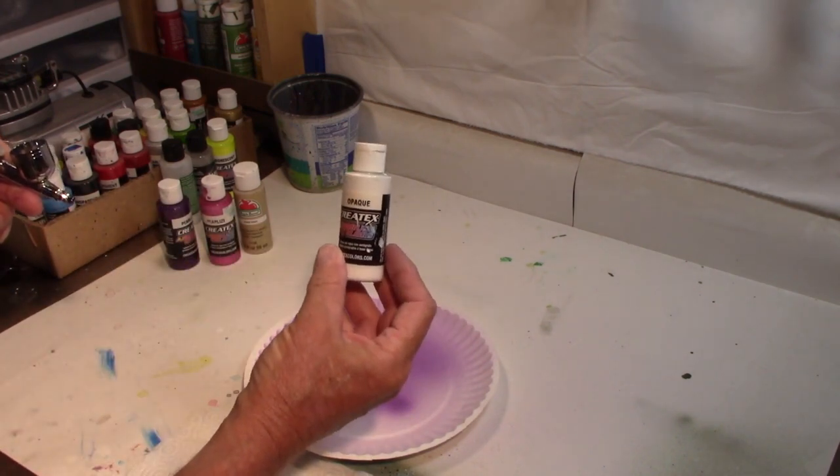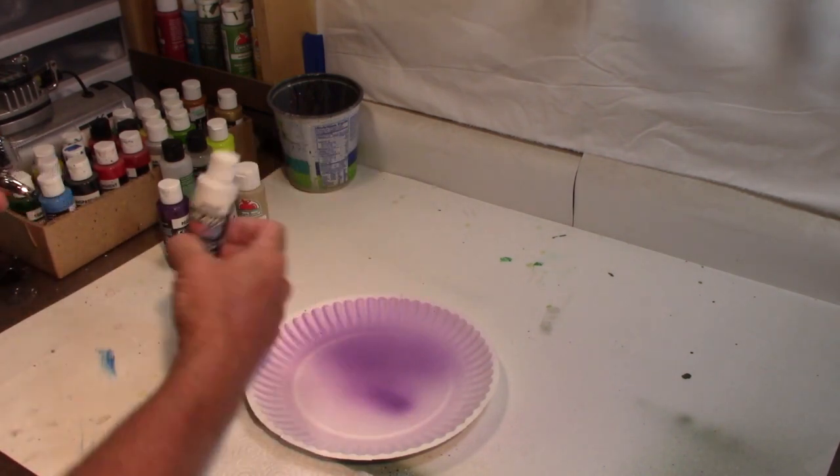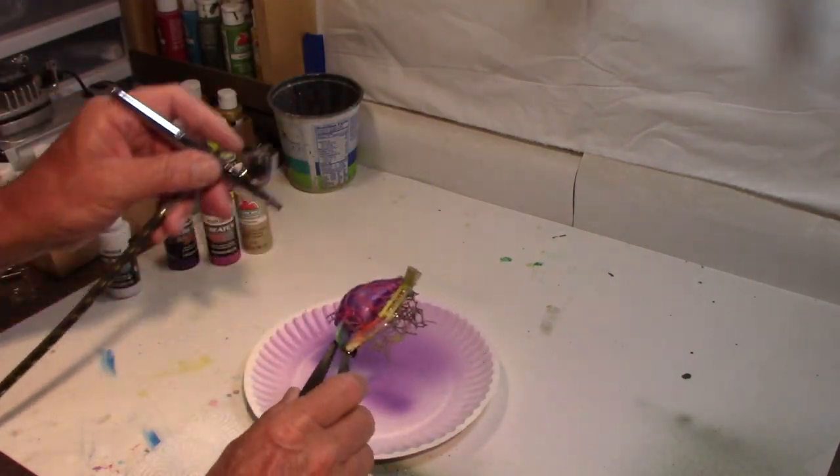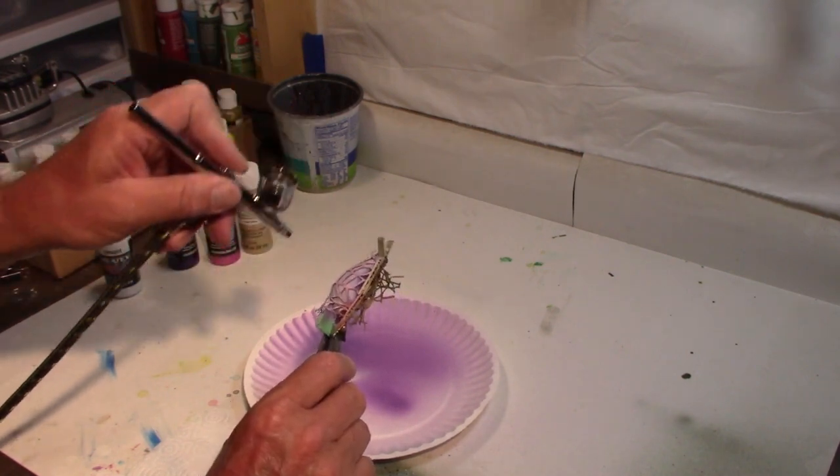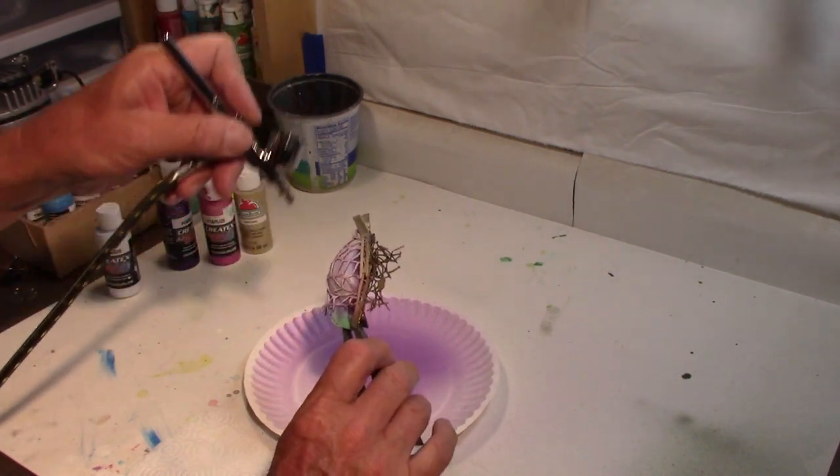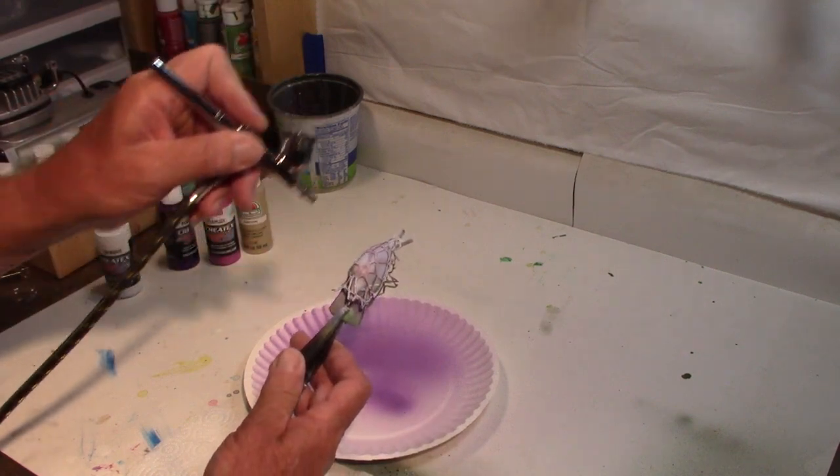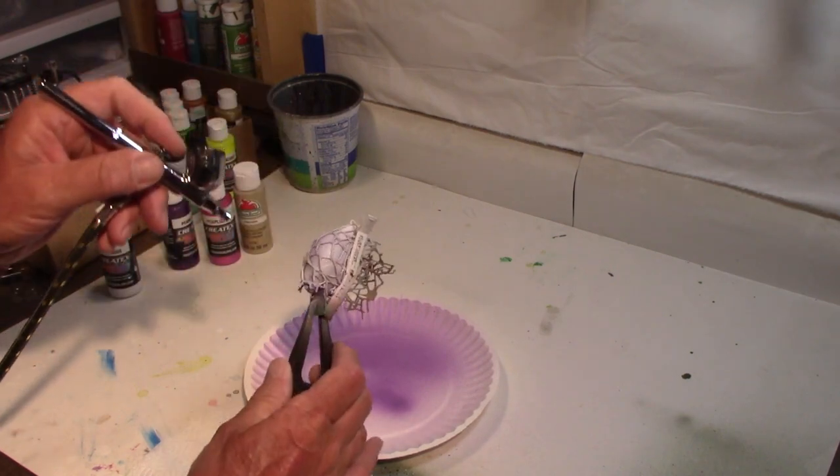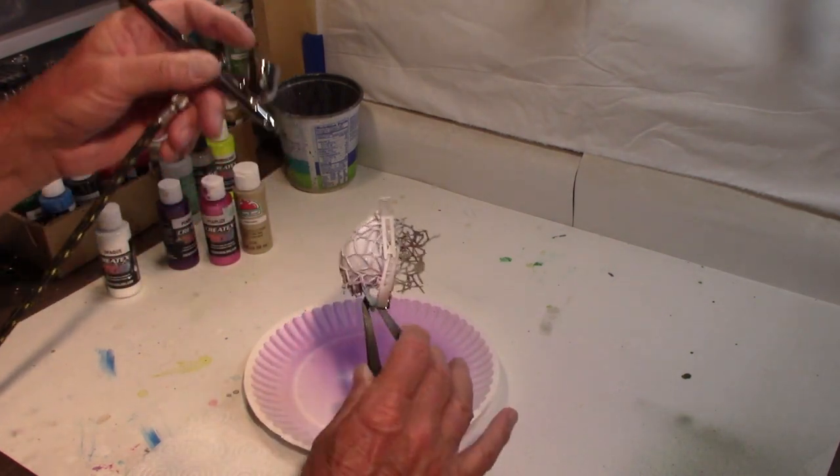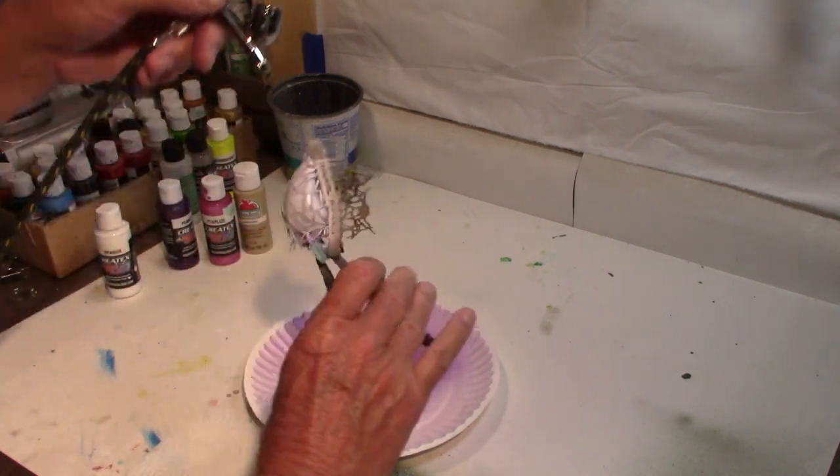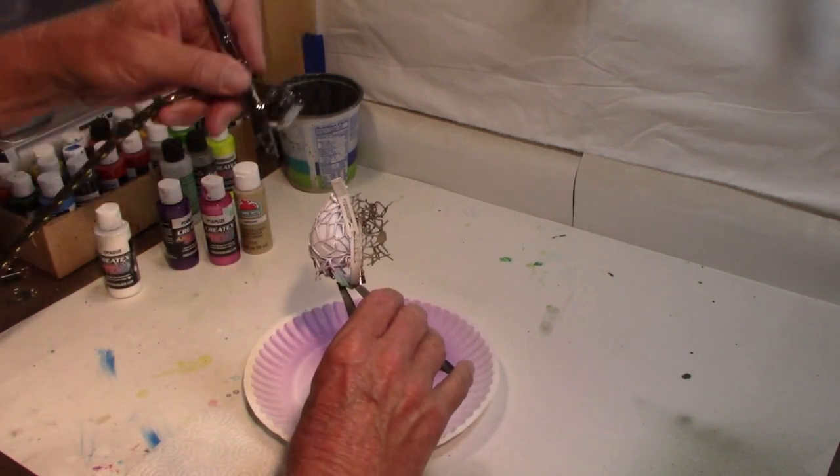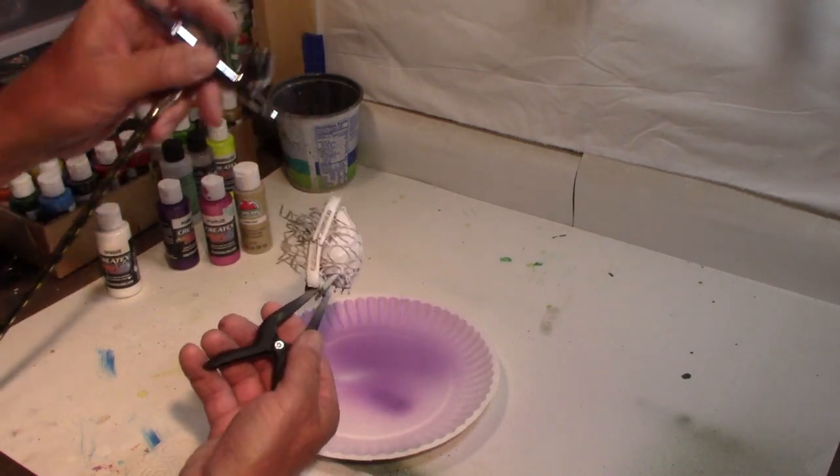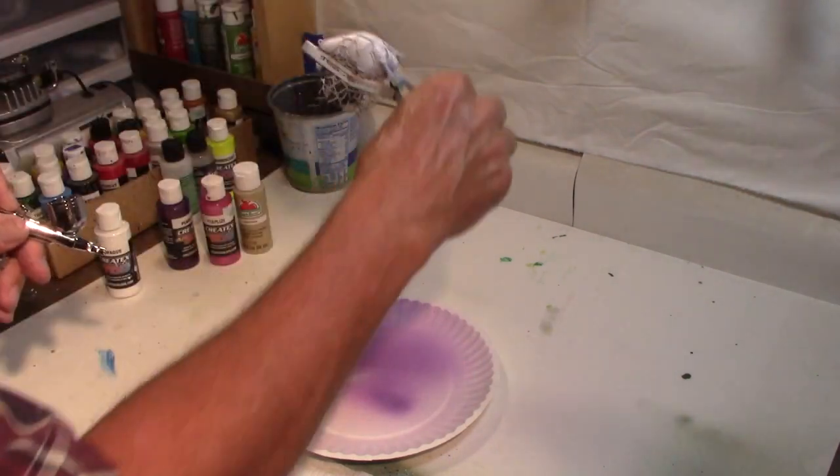Alright. Now we're going to use the Createx Opaque White. And we'll cover everything. You just want to get a good, even coating of white. Cover up all that plum really good. And I make sure I hit it from the front, and I come back and I hit it from the back both. There'll be a reason for that later. There we go. Covered in white.